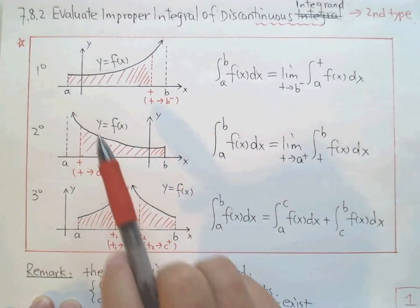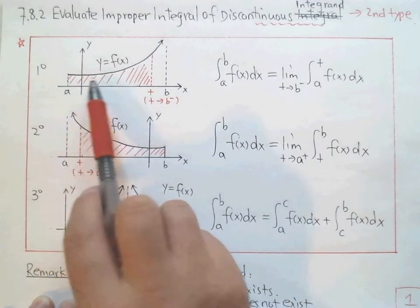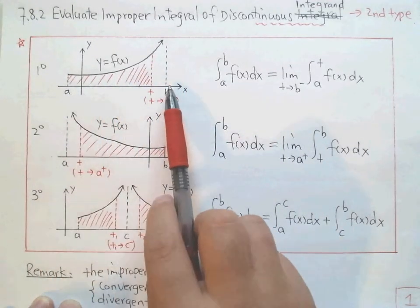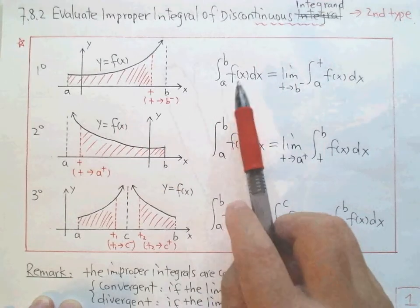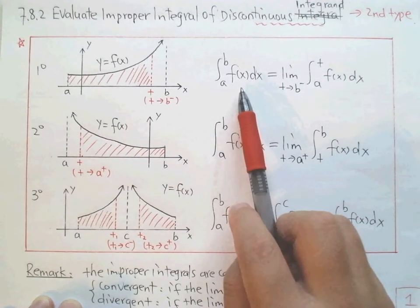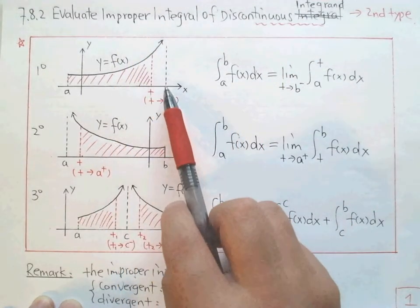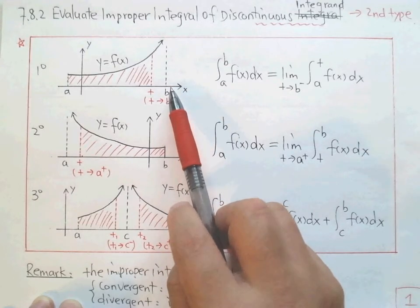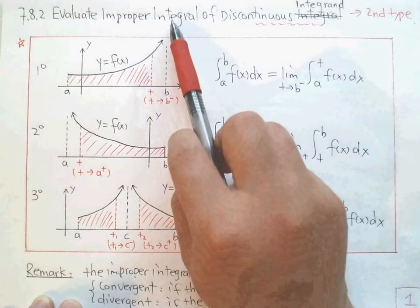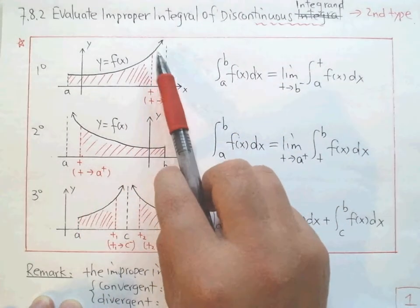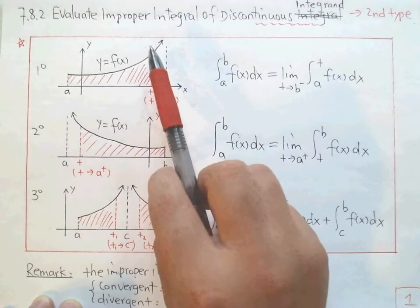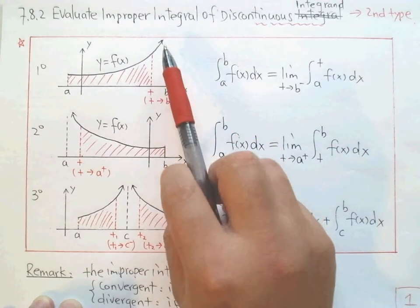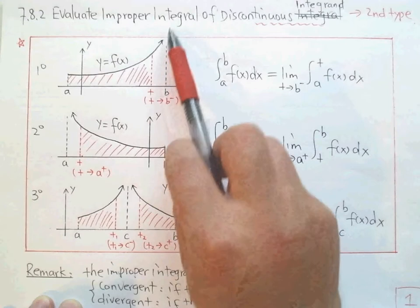The first case is integration for a function from a to b. The interval looks normal, like a normal definite integral. However, it is not proper — it's improper. Why? Because b is discontinuous; we cannot take a value at b. The function goes to infinity at b. This type of discontinuous function has another name: infinitely discontinuous, because the value of the function goes to infinity and we cannot have a value at b.